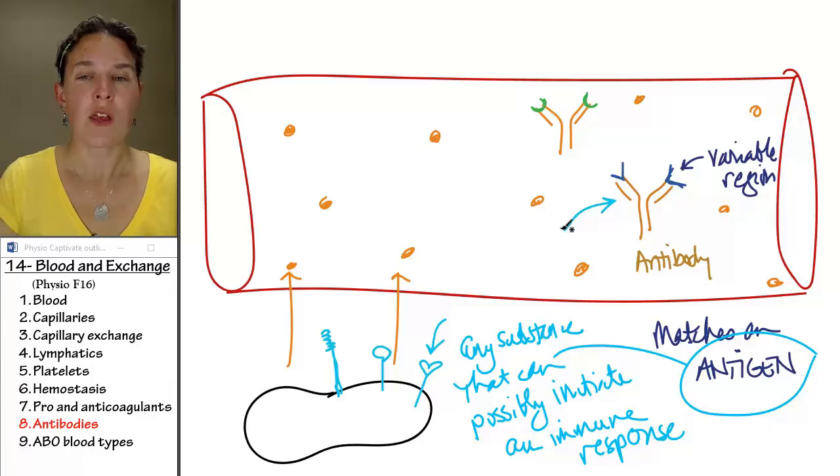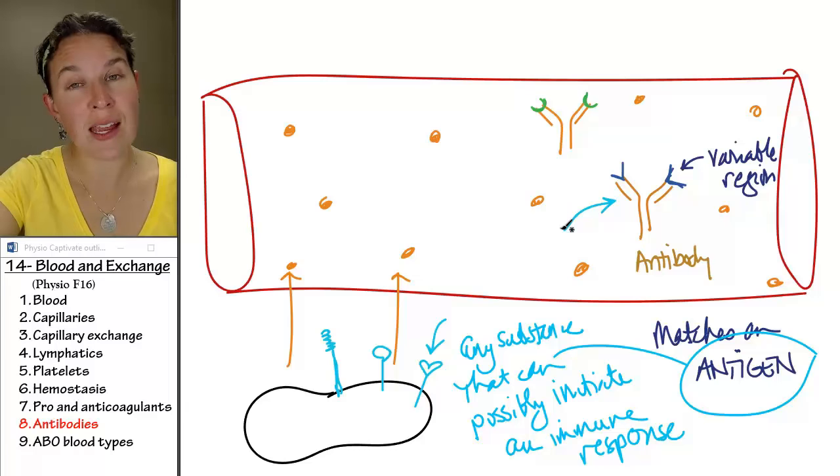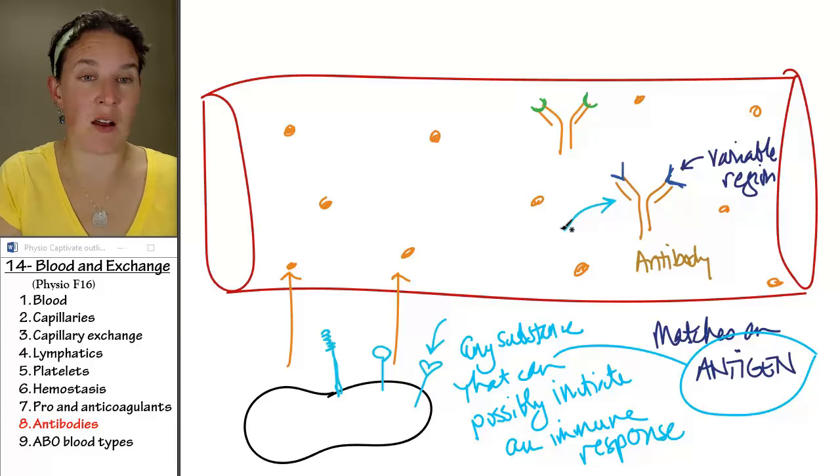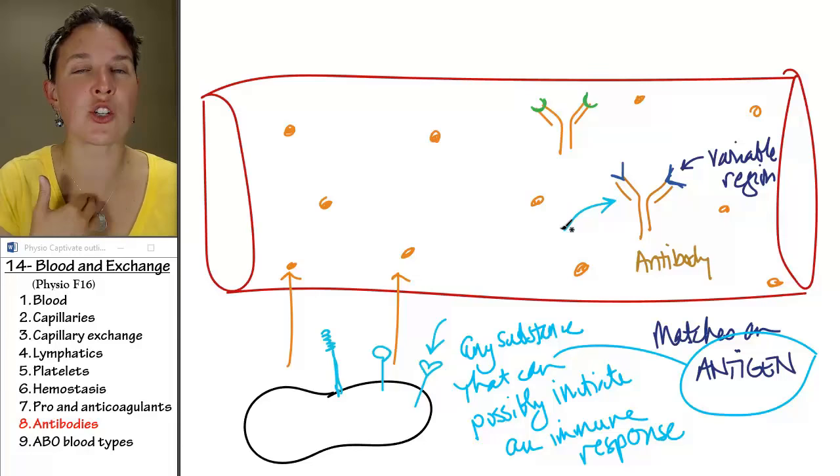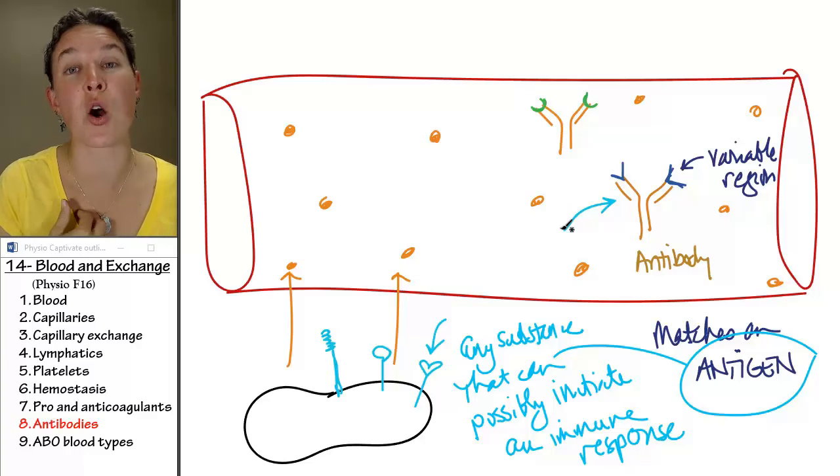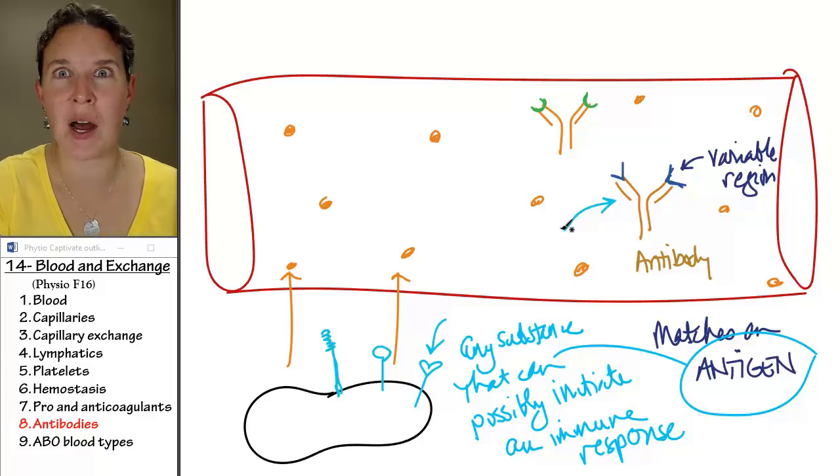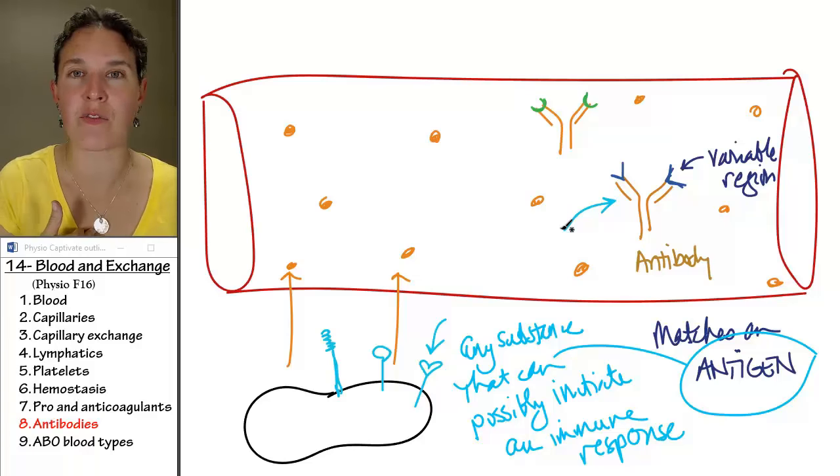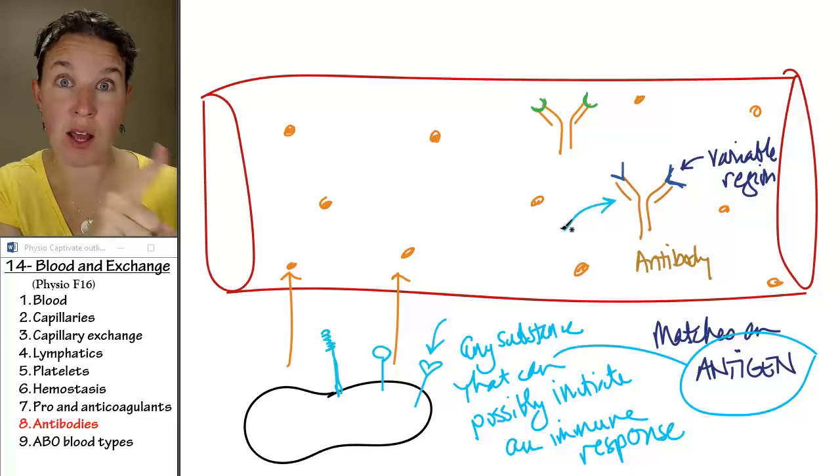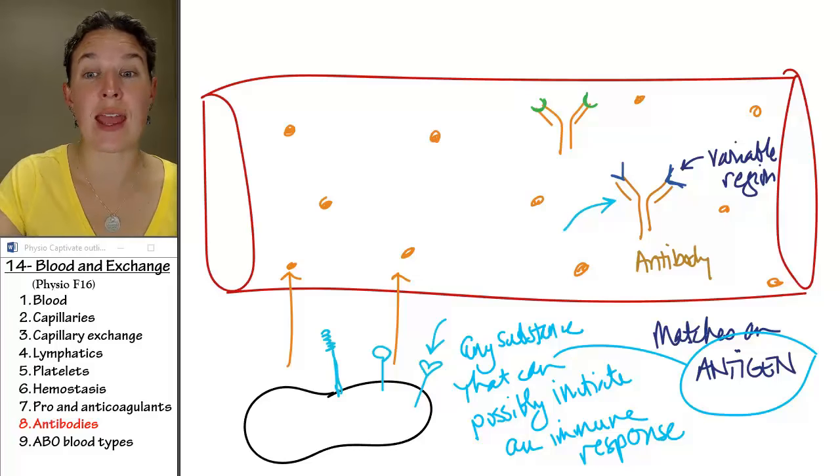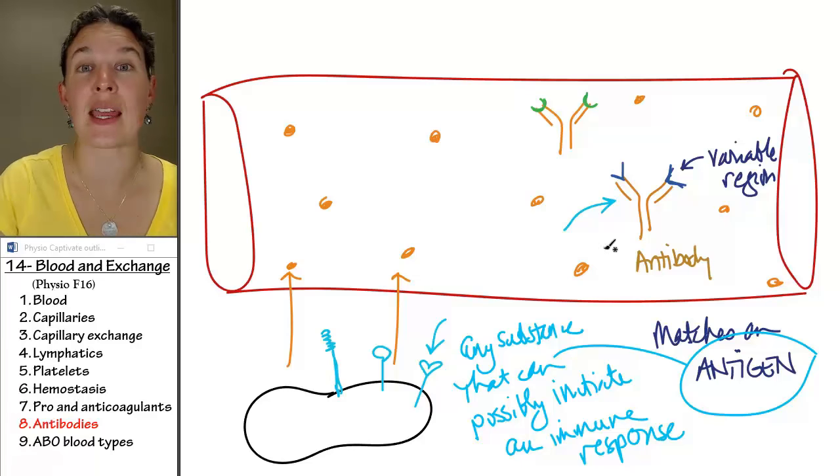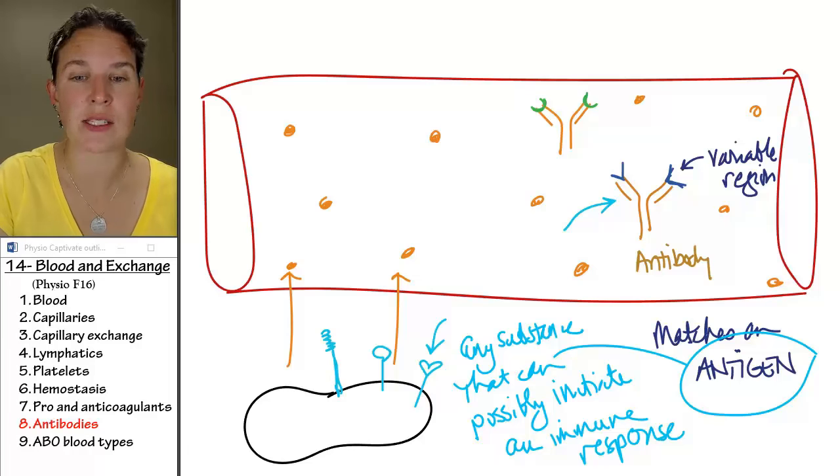Know that antibodies initiate immune responses. They respond to a bad guy coming in. Know that antigens are embedded in all of our cells and we shouldn't react to things that are our own. We shouldn't have antibodies against self-antigens. We should have antibodies against non-self antigens. And blood typing has to do with this. Let's talk about our blood types.